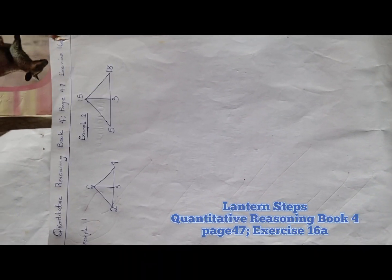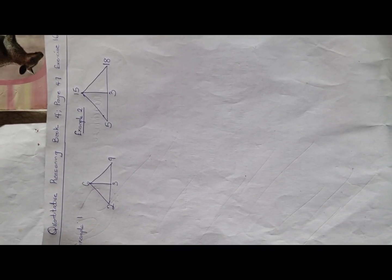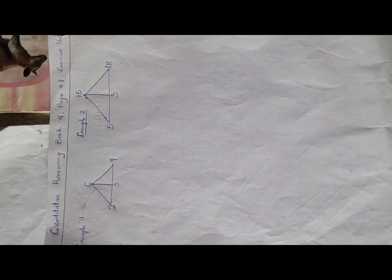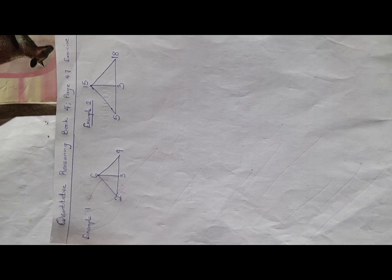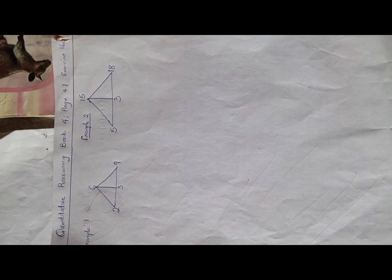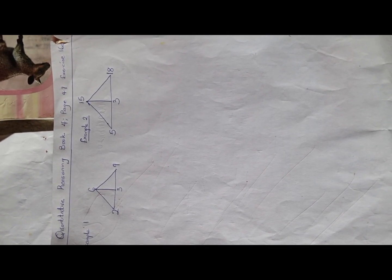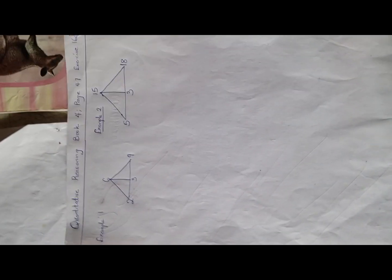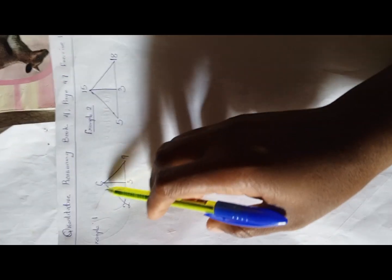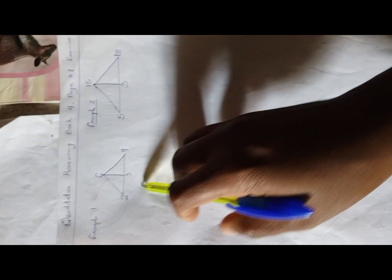Welcome to quantitative reasoning solution section. We're going to be considering this exercise from Book 4 of Lantern Quantitative Reasoning, page 47, exercise 16E. We have this example, and the examples will serve as a guide for you to walk through the other questions.